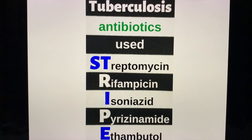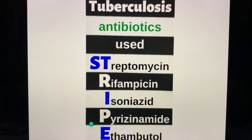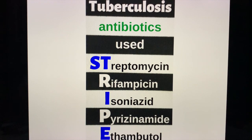I want everyone to memorize the common drugs used for tuberculosis. The mnemonic here is STRIPE: Streptomycin, Rifampicin, Isoniazid, Pyrazinamide, and Ethambutol. These are the most common drugs used for the treatment of tuberculosis. Remember: STRIPE.